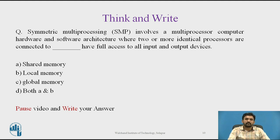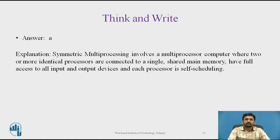Here is a question: a symmetric multiprocessor involves multiprocessor computer hardware and software architecture where two or more identical processors are connected and have full access to all input and output devices. The options are: shared memory, local memory and global memory, or both A and B. The answer is A — symmetric multiprocessor involves multiprocessor computers where two or more identical processors are connected to a single shared main memory and have full access to all input and output devices.